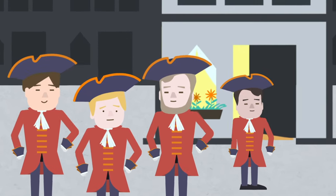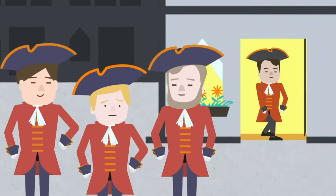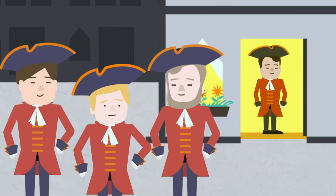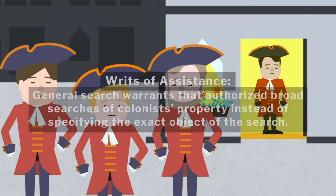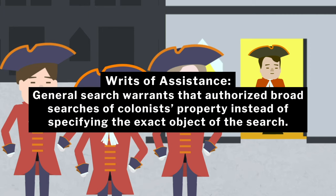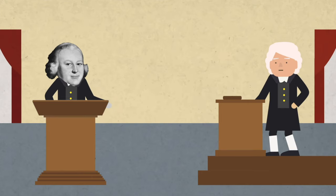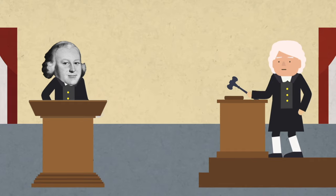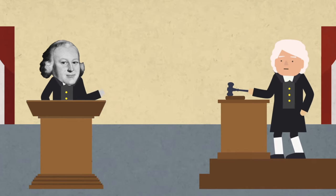For example, the smuggling of prohibited and untaxed goods was widespread in the American colonies. British officials used writs of assistance — general search warrants that authorized broad searches of colonists' property instead of specifying the exact object of the search. James Otis, a lawyer in Massachusetts, argued in court that these broad searches violated the traditional rights of Englishmen.